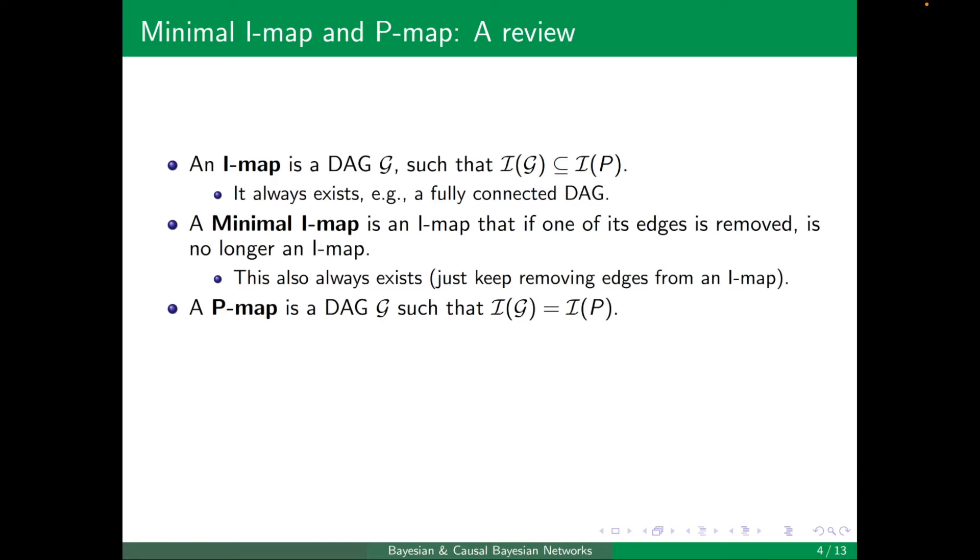Now, a P-map was a DAG such that it completely covered all of the conditional independencies in the joint distribution. So I(P) wouldn't have anything more. They are exactly matching.